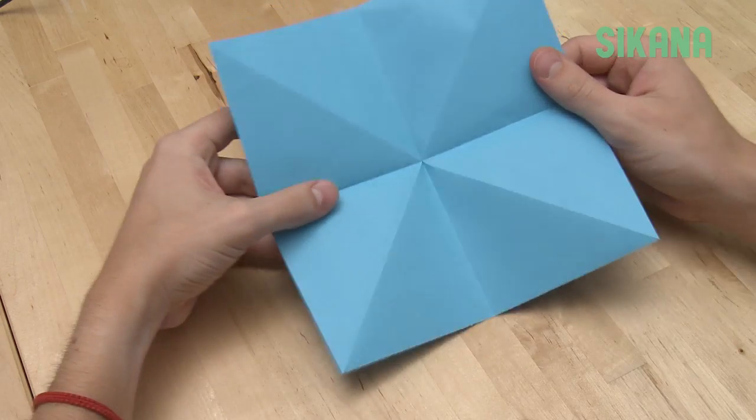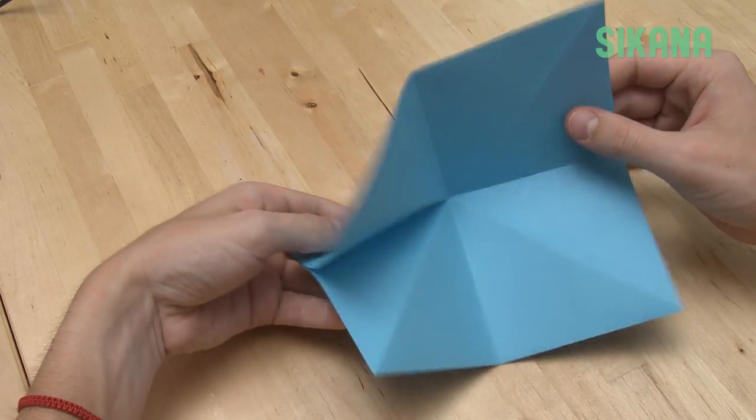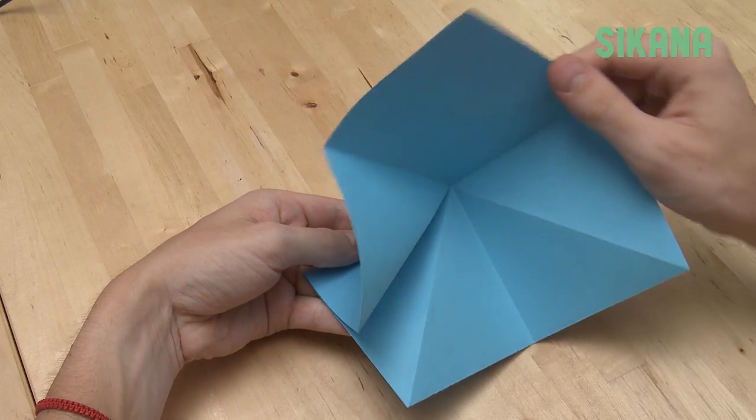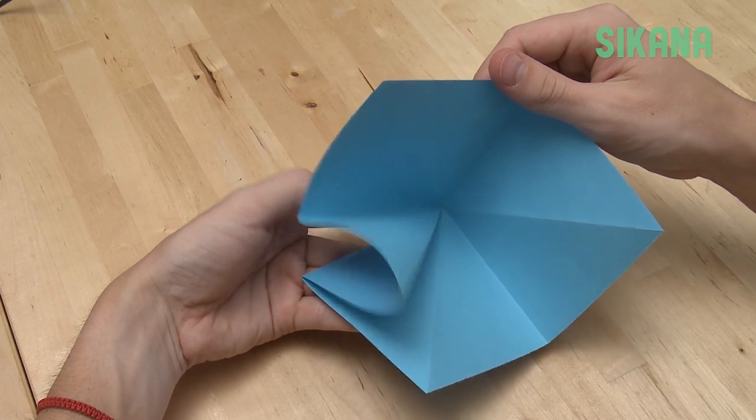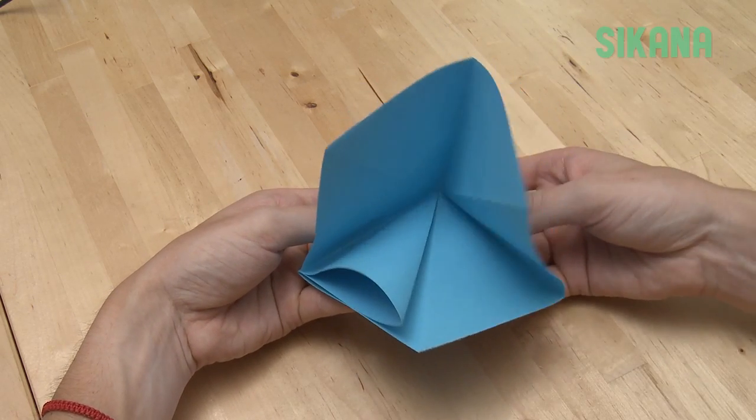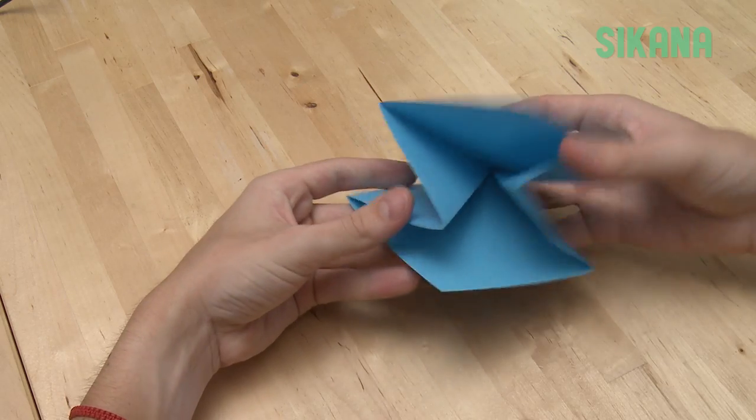These creases will allow you to fold everything inward like this. Fold one side first, then the other, and you get this shape.